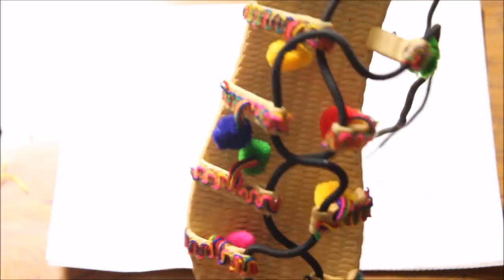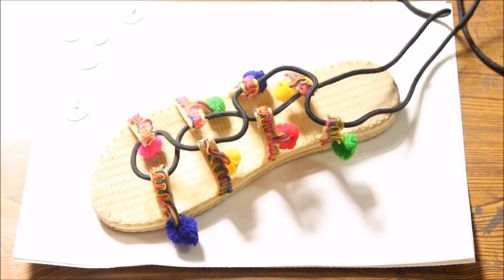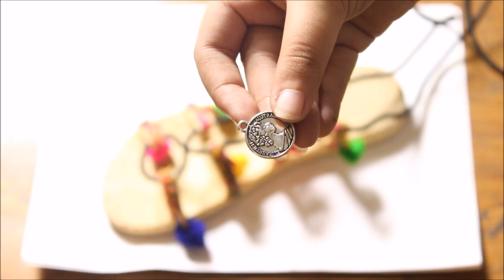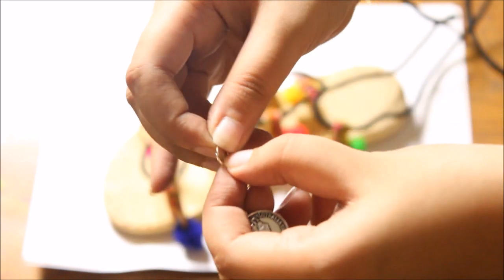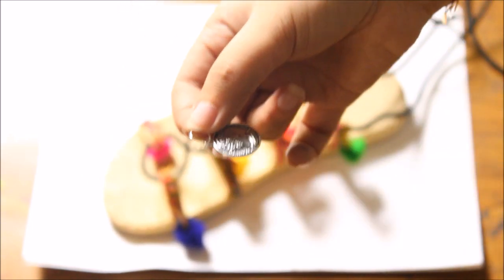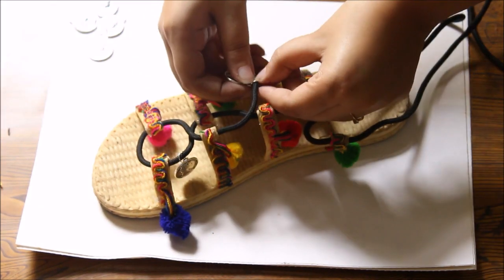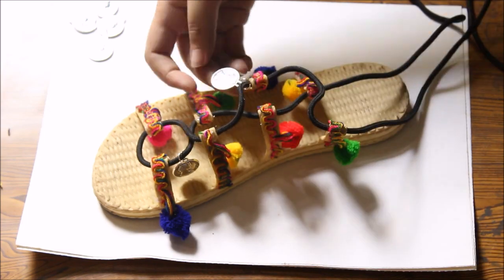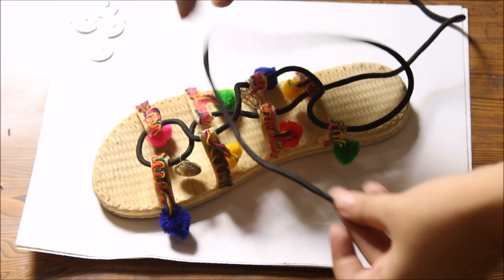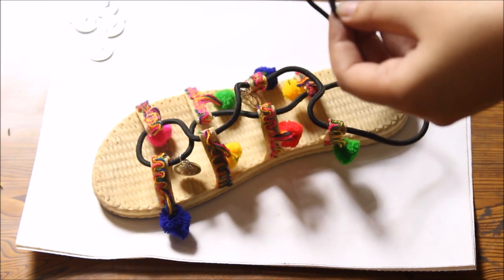I will cut off the extra lace after attaching the pom-pom lace. This is how the flats look. Next I am going to attach two coin charms to each of my flats with the help of jump rings.